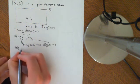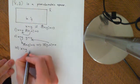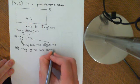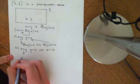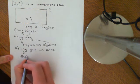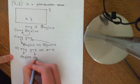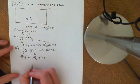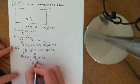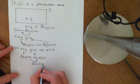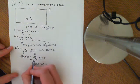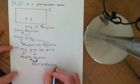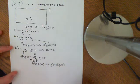The third property is transitivity. We want to show that if x is related to y and y is related to z, that implies x is related to z. If x is related to y, then d̄(x, y) = 0; if y is related to z, then d̄(y, z) = 0. Now we use the triangle inequality: d̄(x, z) ≤ d̄(x, y) + d̄(y, z). That's just the axioms of a pseudo-metric space.